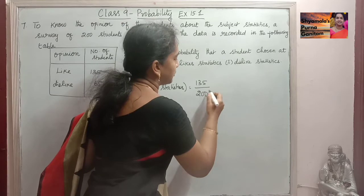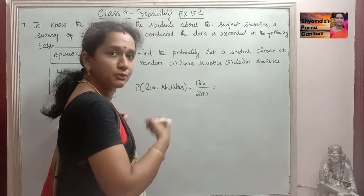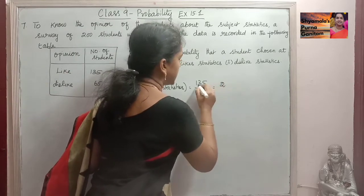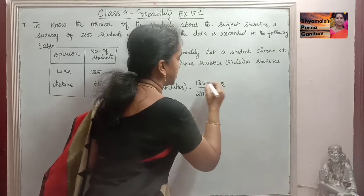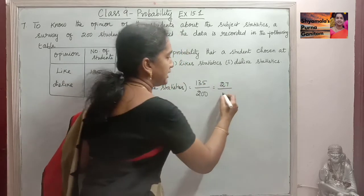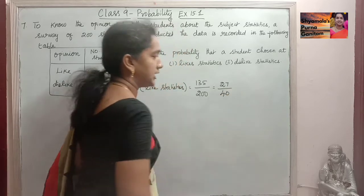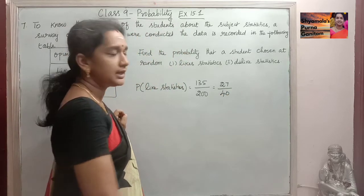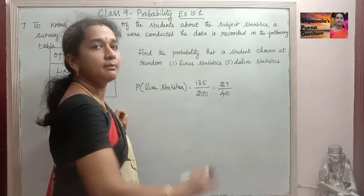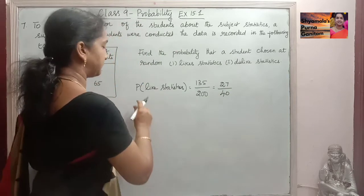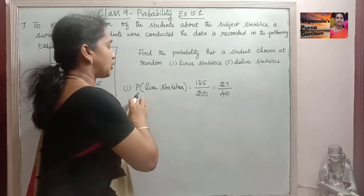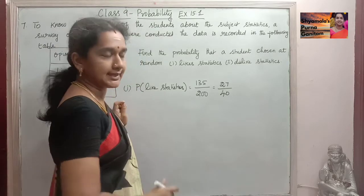Now simplifying 135 by 200: dividing both by 5, we get 27 by 40. So 27 by 40 is the simplest form and that is the answer for the first part — the probability of the students who like statistics.